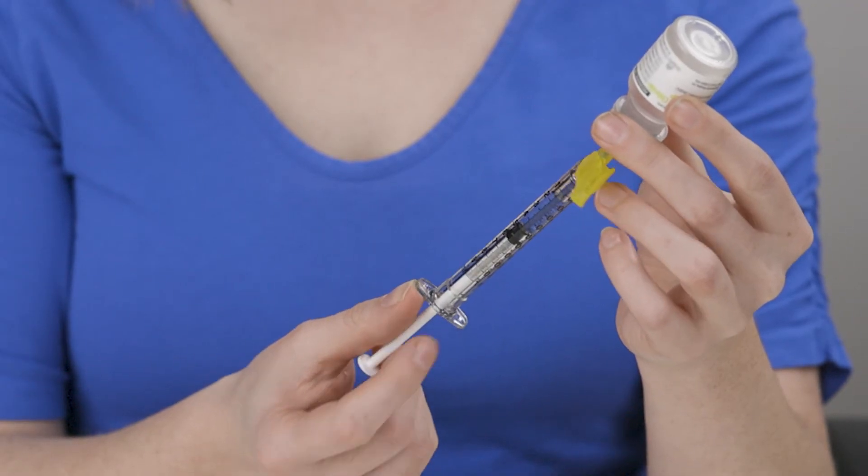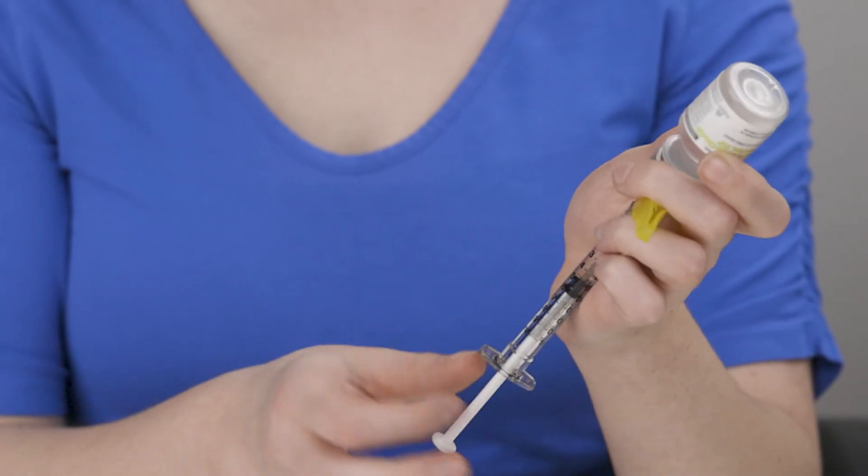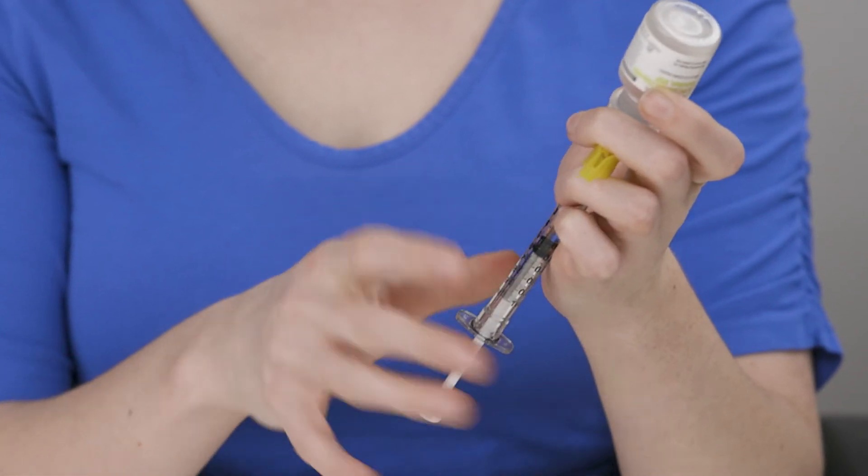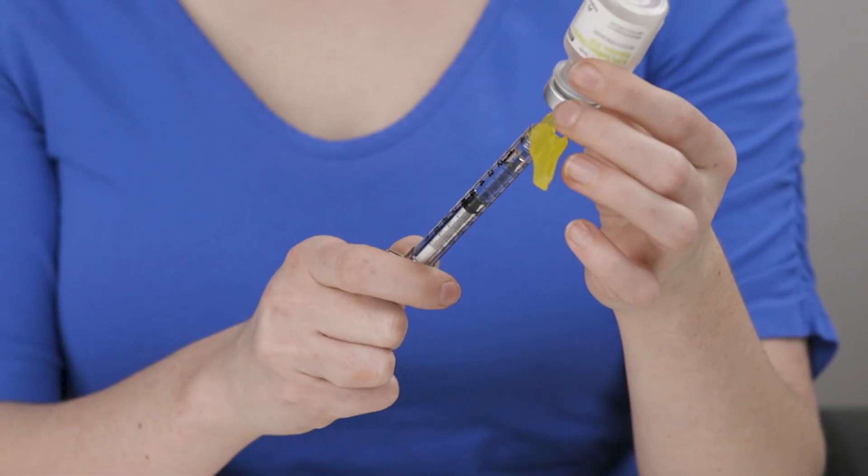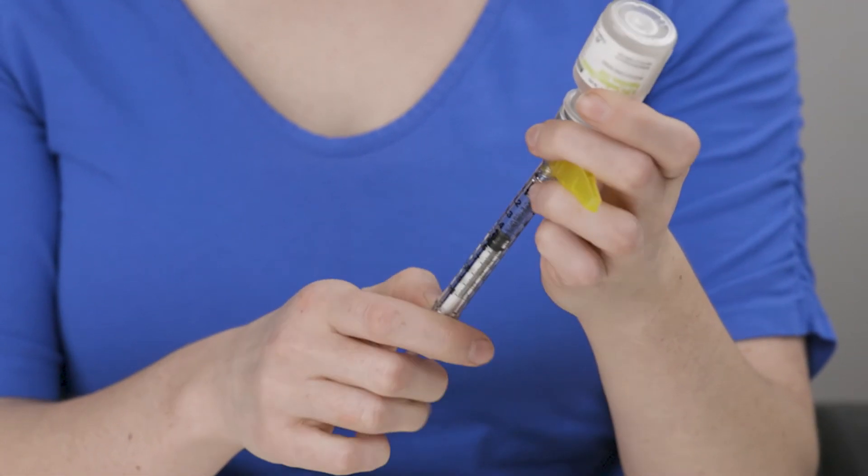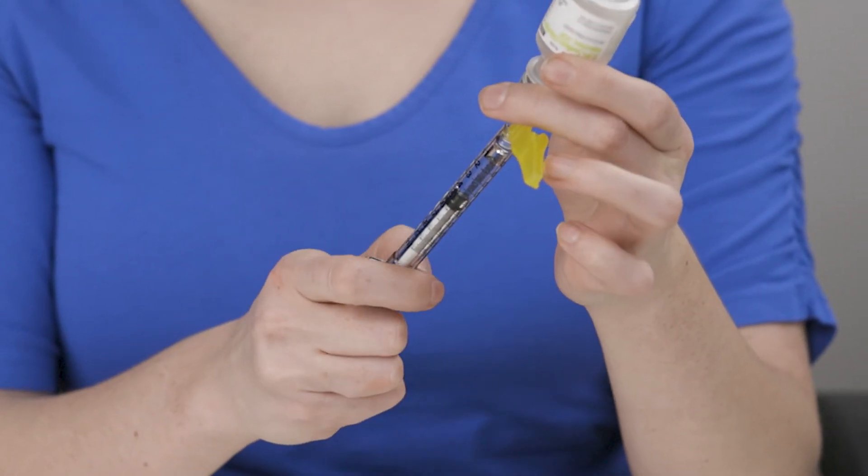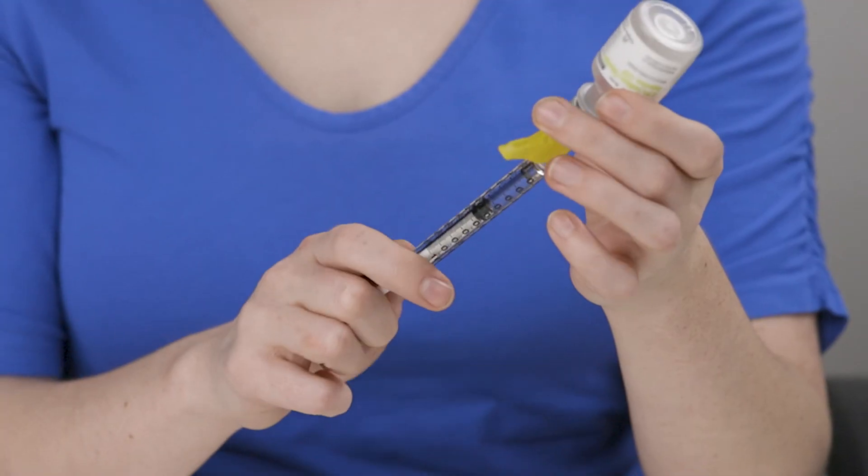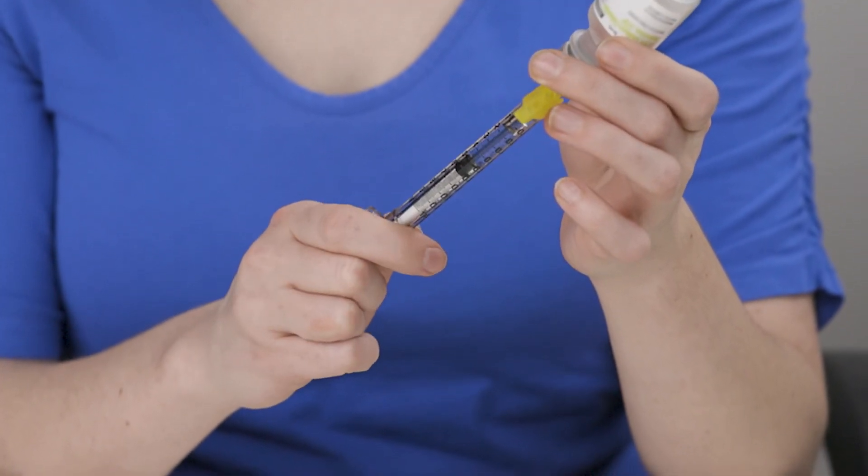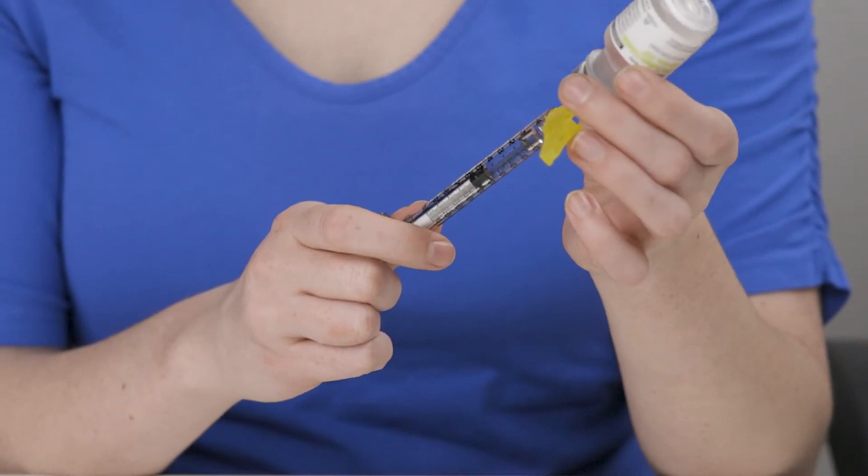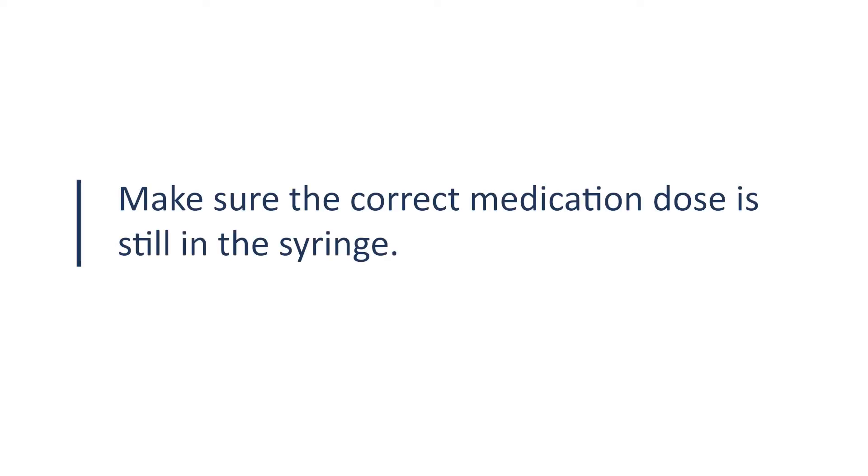If there are air bubbles in the syringe, flick the syringe with your fingers until the air bubbles rise to the top. Gently pull the plunger down and then push it back up to force the bubbles out of the syringe. Make sure the correct medication dose is still in the syringe.